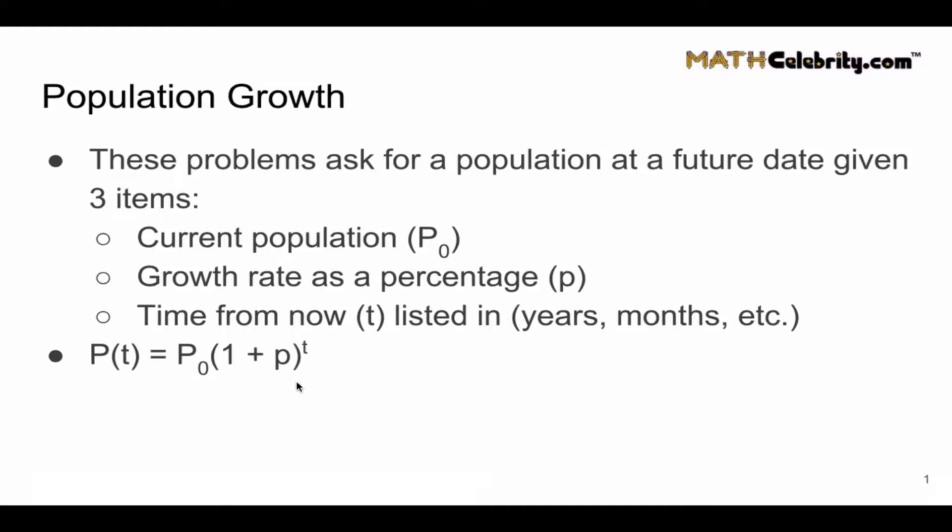T represents the time, whether it's listed in years, months, or days. And what we're doing here is we're taking an initial population at time zero, we're raising it to one plus P, where P is a percentage. We're adding one plus P, and we're raising that to the T power. And you'll get your population at time T. So with this formula and these inputs, let's look at an example.